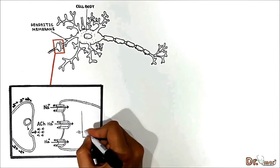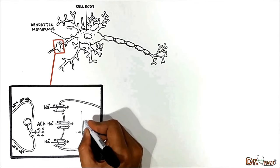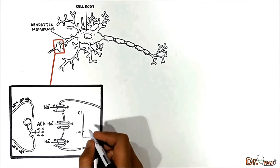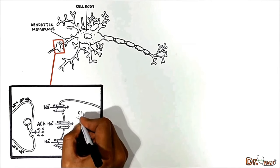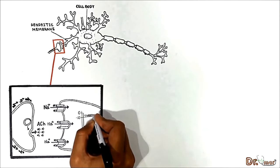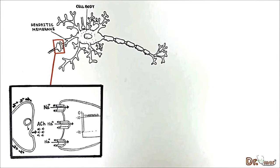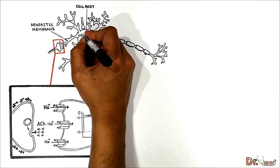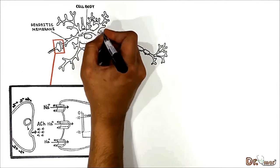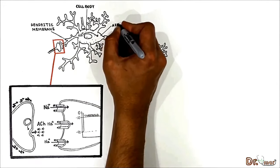Sodium influx depolarizes the postsynaptic membrane — let's suppose from negative 70 to zero millivolts — to a value approximately halfway between the equilibrium potentials for sodium and potassium. It is very important to know that at negative 10 millivolts we have the threshold potential. When we reach the threshold potential, the current travels along the dendritic and cell body membranes up to the axon hillock.